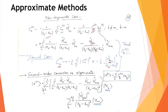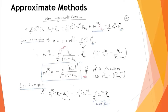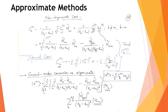We now have v2 (the eigenstate correction) and w2 (the second-order energy eigenvalue). Previously we also obtained w1 and v1. So if you know w0 and v0 — the zeroth-order terms — you can calculate w1 and v1, then proceed to the second-order term, and then higher-order terms if required.